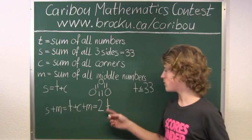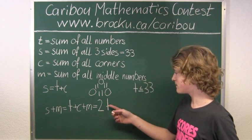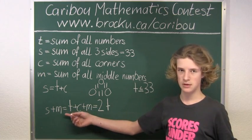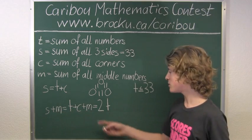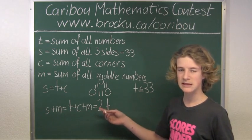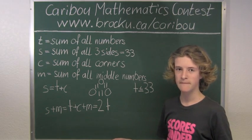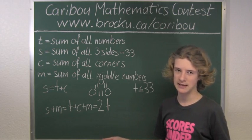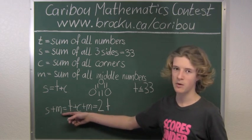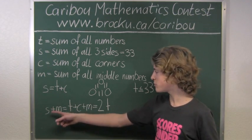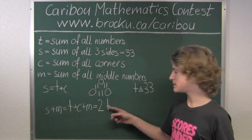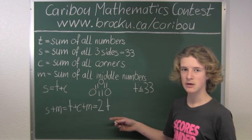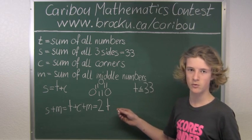So now, since we want the smallest value of t, we will start with m being zero. So we know that s is 33, so 33 equals 2t, so t would be 16.5. But we know that we cannot have any decimals, so let's make m 1 greater. So 33 plus 1 is 34 equals 2t. So t would equal then 17. So now let's check if 17 works.